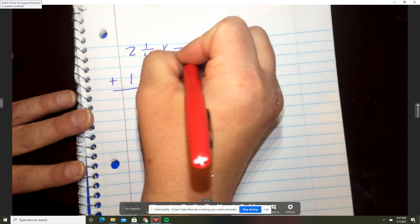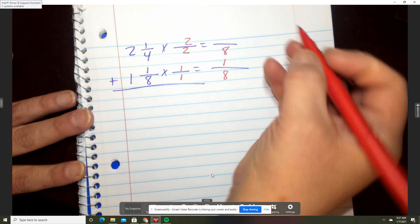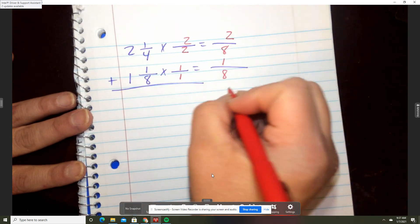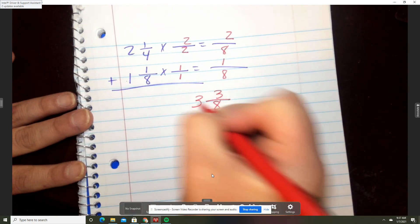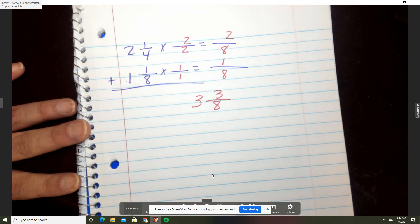All right, you add those. Two plus one is 3/8. Don't forget your whole number. So that is that. Easy, easy peasy.